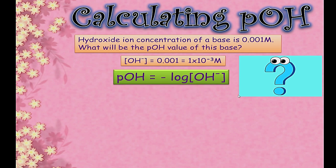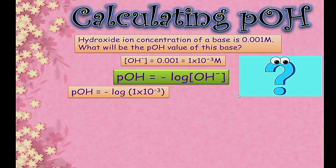We will use the formula: pOH = −log[OH⁻]. Putting the value into this formula: pOH = −log(1 × 10⁻³). In place of the hydroxide ion concentration, I have substituted 1 × 10⁻³.